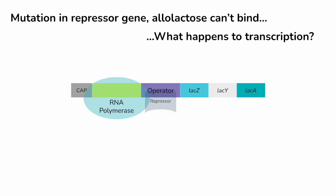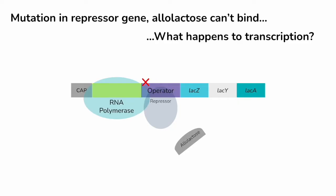Let's apply this. Let's say there's a mutation in the gene for our repressor protein — remember, the repressor is a protein itself. In that mutation, allolactose can no longer bind to the repressor. If allolactose can't bind to the repressor, the repressor stays on the operator, because it will not be removed unless allolactose binds to it. RNA polymerase can no longer move down the operon and transcribe the genes to generate these proteins.